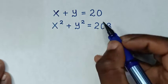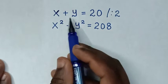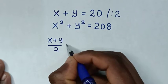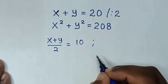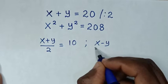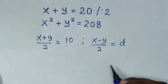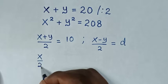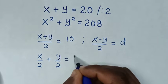So from this first equation, we'll divide it by 2. Then it will be x plus y over 2 is equal to 20 divided by 2, which is 10. Then we take the difference of x and y, which is x minus y divided by 2, and we let that equal d. So it will be x over 2 plus y over 2 is equal to 10.